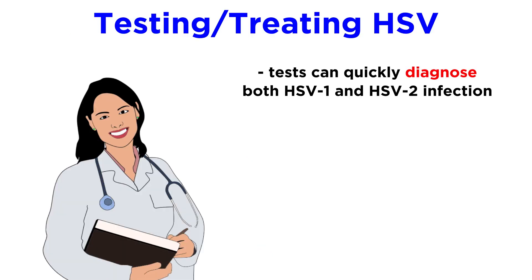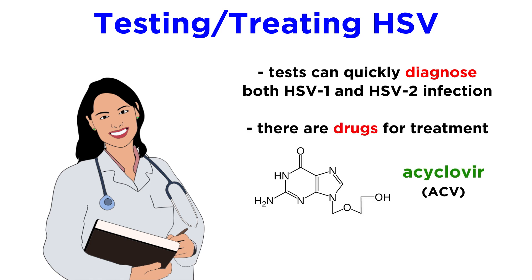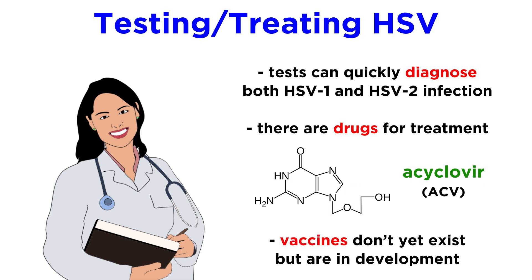There are multiple tests that are fairly quick to diagnose HSV1 and HSV2 infection. Scientists have developed multiple drugs to treat HSV infection, like FDA-approved acyclovir, abbreviated as ACV. While there isn't a vaccine available for HSV just yet, there are vaccines being developed to either prevent transmission or treat infected people. And now that we've covered HSV, let's move on to a few more human herpesvirus diseases you might have heard of.